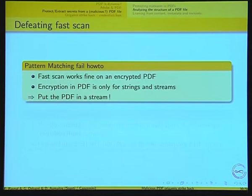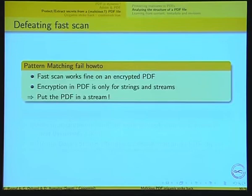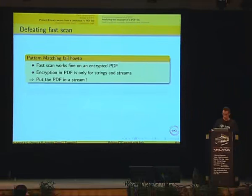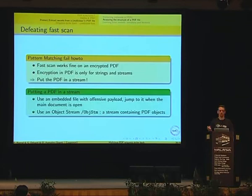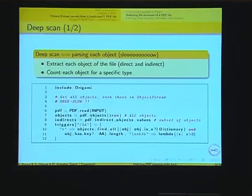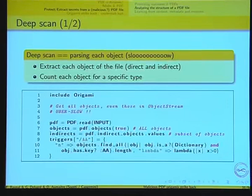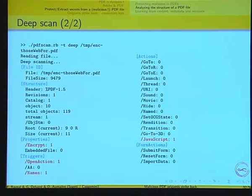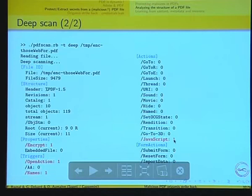Pattern matching is easy to defeat. The best way is using object streams combined with encryption. An object stream is a stream that contains PDF objects. If you use an object stream in an encrypted PDF, the content of the stream — that is, the PDF objects themselves — will be encrypted, so pattern matching can no longer work. However, with our library we can read and parse object streams by instantiating each object we read from the PDF file. It's really slow, but you get the exact match on each object.